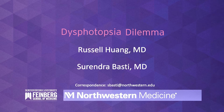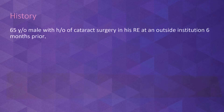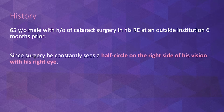Let's look at an example. A 65-year-old patient presented to us for a second opinion. He had undergone uneventful cataract surgery at an outside institution six months prior. While the overall visual acuity was excellent after cataract surgery, the patient constantly noted that there was a shadow in the shape of a half circle, present on the right side of his visual field in the right eye.